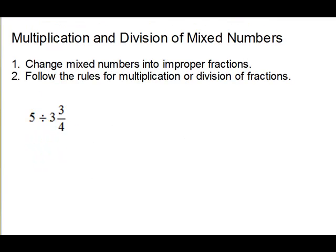Next we'll look at a division problem: 5 divided by 3 and 3 fourths. First we'll change these to improper fractions. For the 5, we put it over 1. For 3 and 3 fourths: whole number times denominator, add back the numerator — 3 times 4 is 12, then 13, 14, 15 — back over the 4, giving 15 fourths. For division, remember you change to multiplication and invert the divisor. So our first piece stays the same, we change to multiplication, and invert the divisor to get 4 over 15.